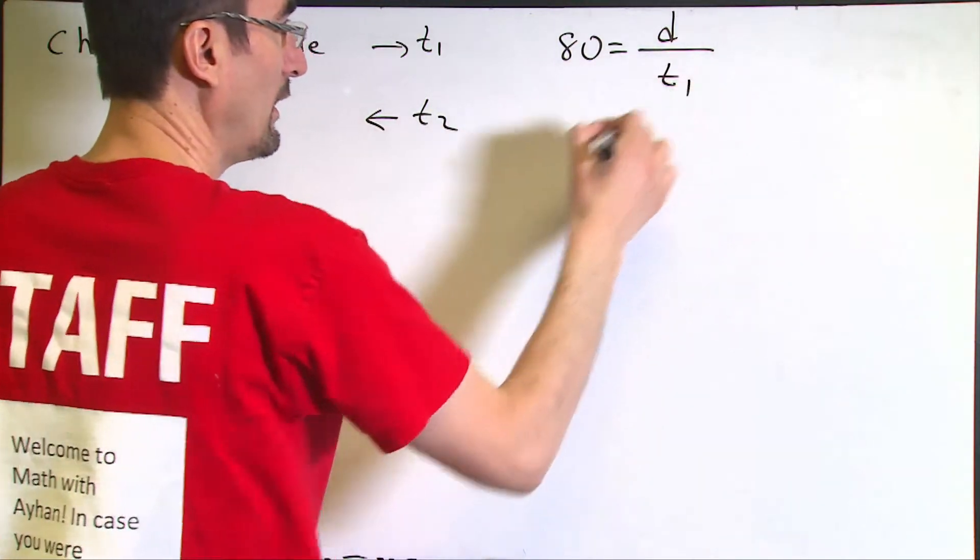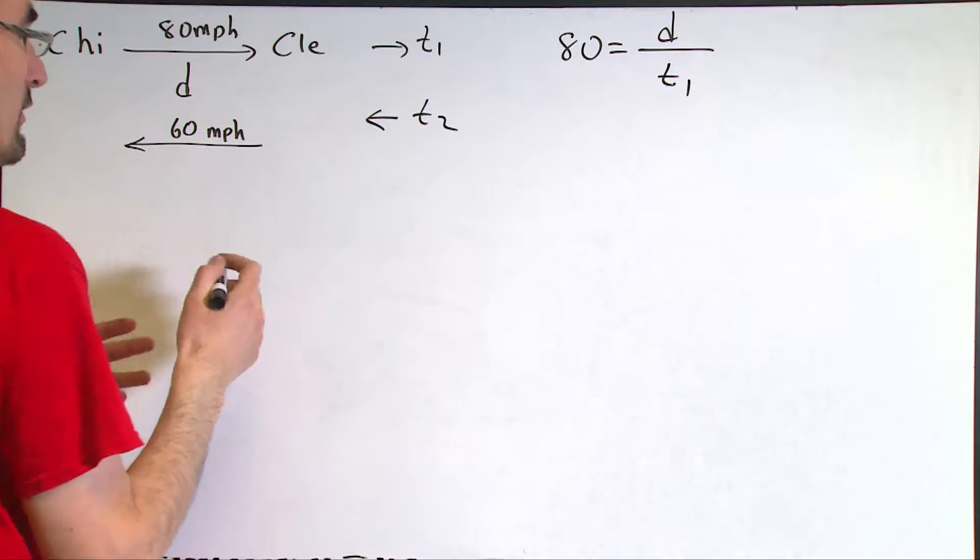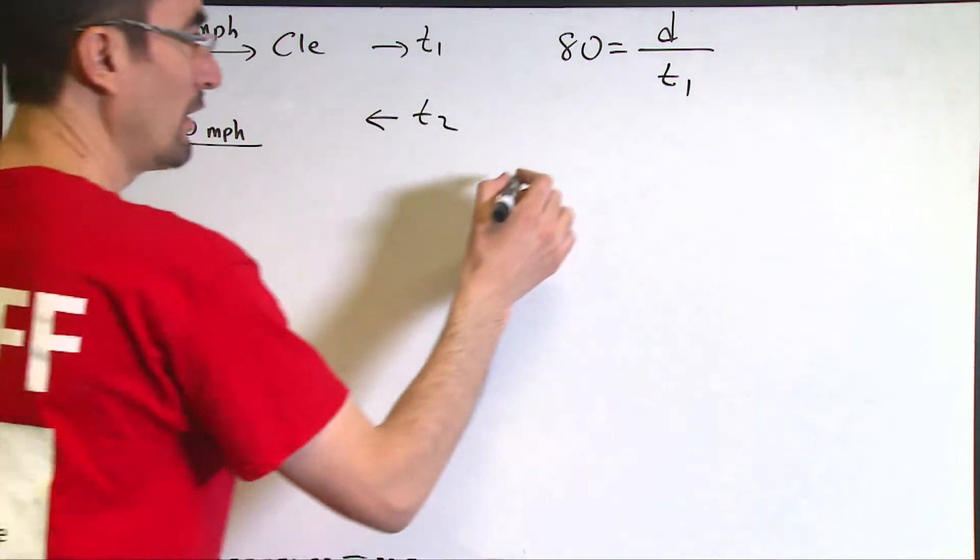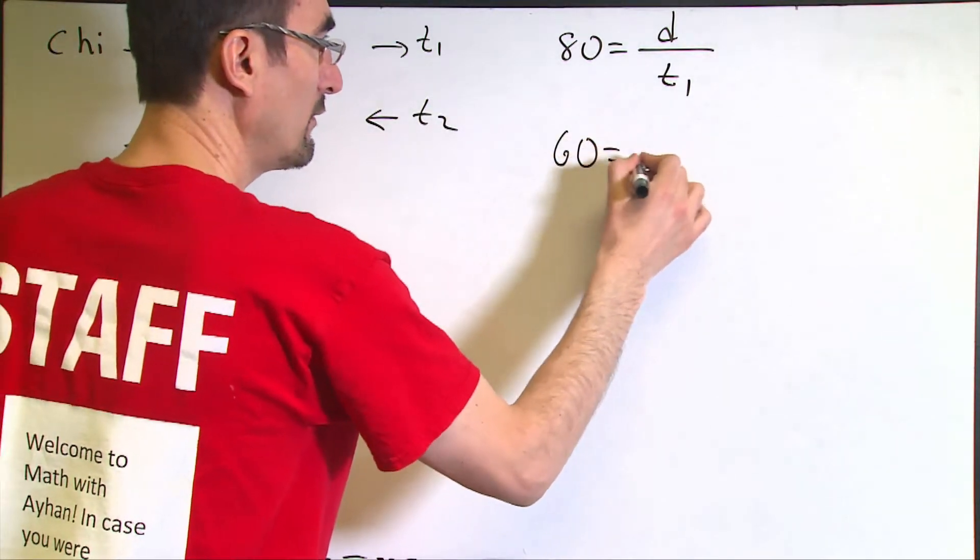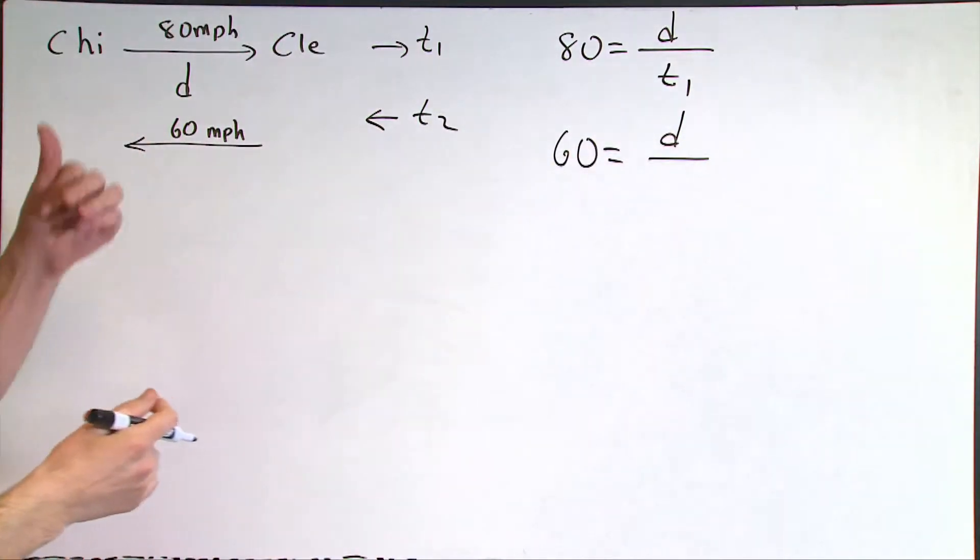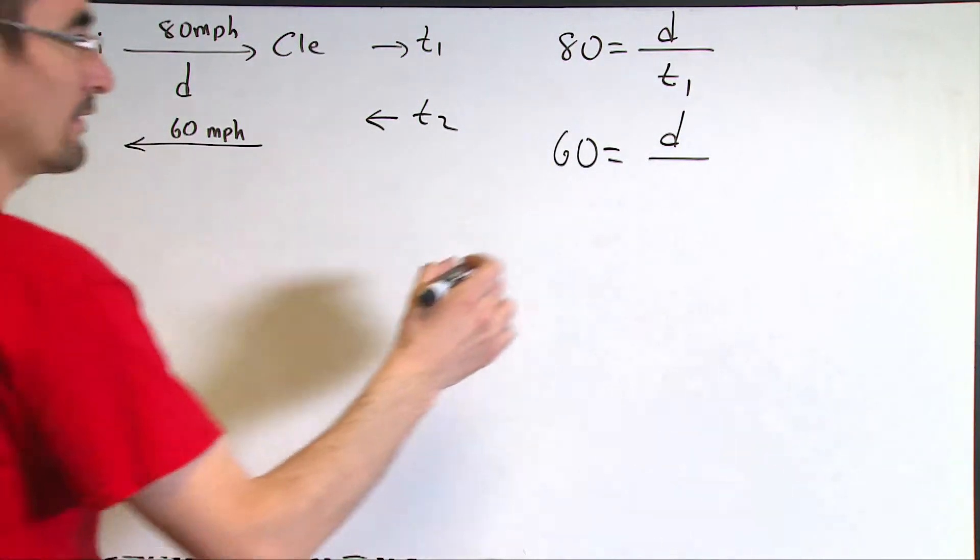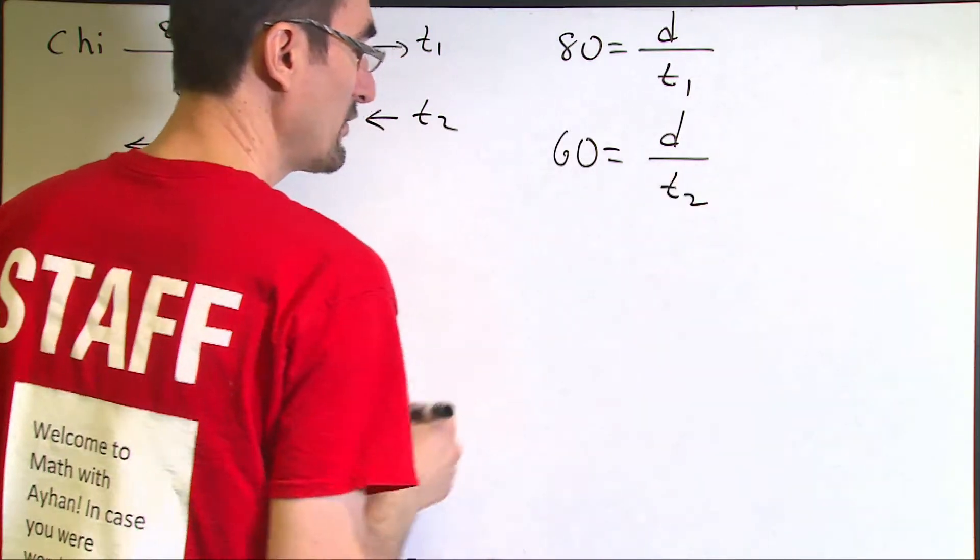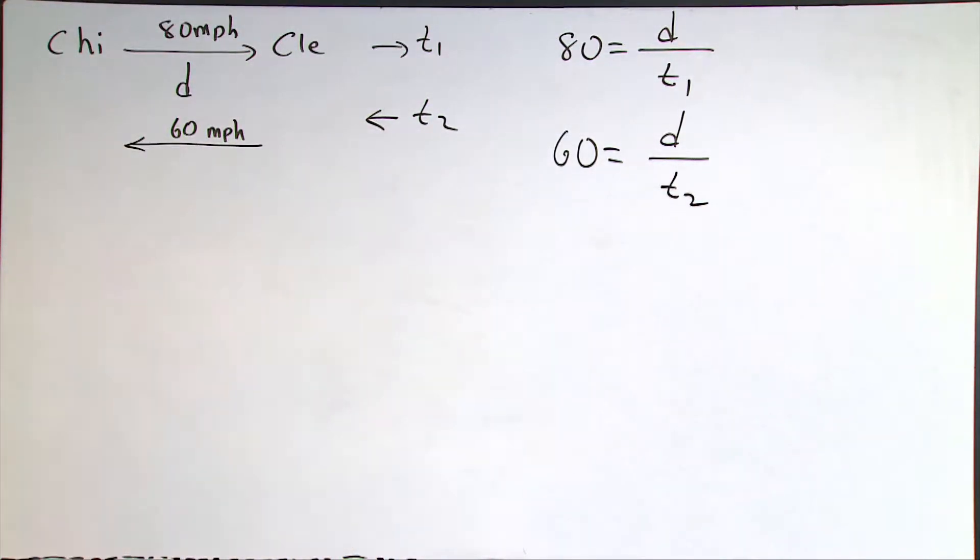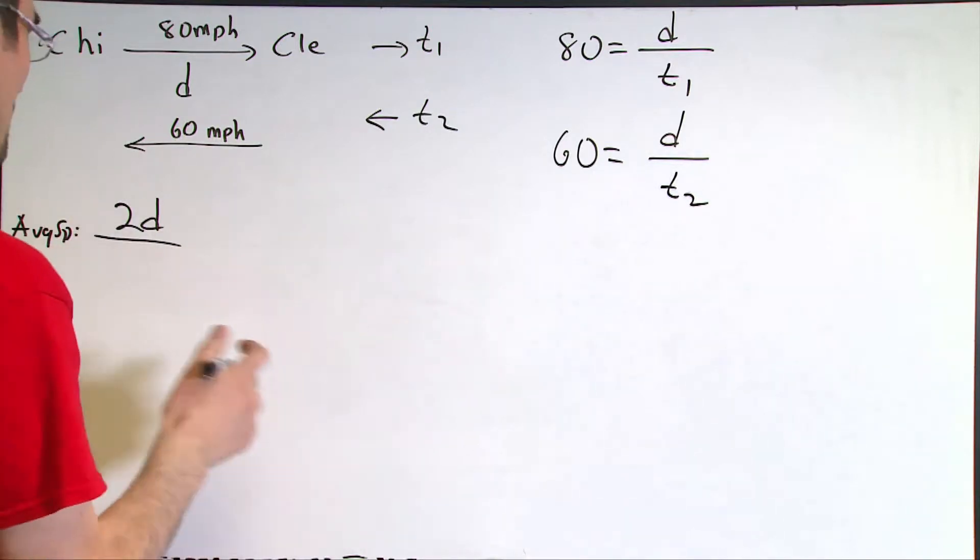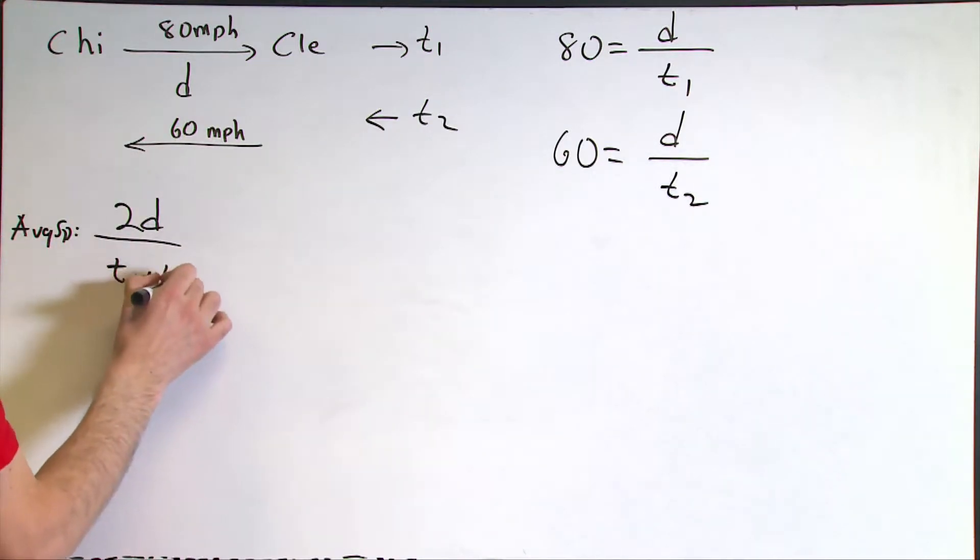And for his travel back to Chicago, since he traveled at 60 miles per hour, I need to put 60 equals the same distance D from Cleveland to Chicago. And time is going to be different, which is T2 in this case. And average speed for the whole entire trip is going to equal total distance, which is D plus D, that's 2D, divided by the total time, which is T1 plus T2.